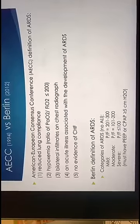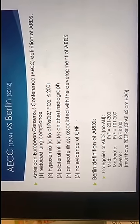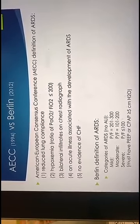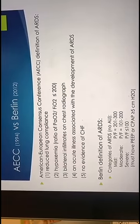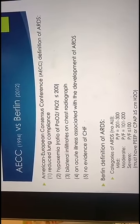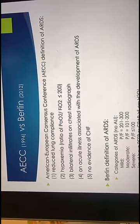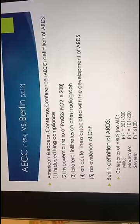Berlin Definition has the same criteria. Plus, they categorized ARDS based on PF ratio to mild, moderate, severe. If the PF ratio is 300 and less, that's mild. If it's 200 and less, that's moderate. If it's 100 and less, that's severe ARDS. And PEEP has to be applied by 5 or more.